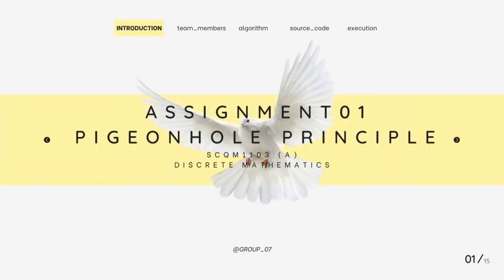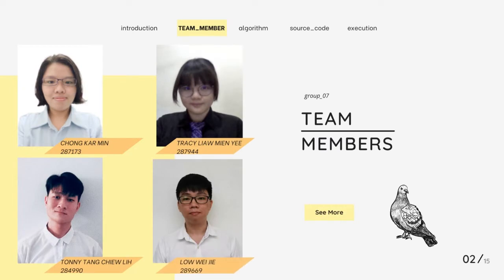A very good day to everyone watching our video, including our dear Madam Rahaya. Today we are from Group 7 and we intend to present our assignment for SCQM 1103, Discrete Mathematics. The team members from Group 7 are Chong Karmin, Tracy Liao, Chong Nithang, and Lo Lui Jie. Our video today will be divided into three sections: the algorithms, the source code, and finally the execution of our program.